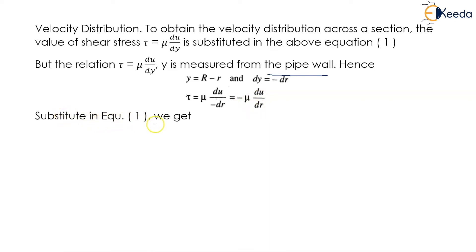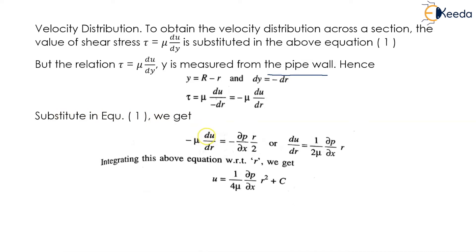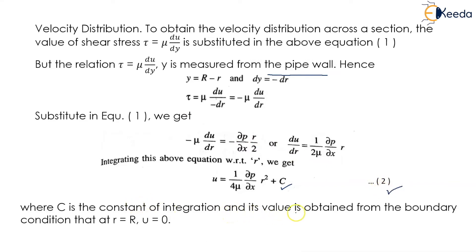Substituting equation 1 we get: minus mu du upon dr equals minus del p upon del x into r by 2. Integrating this equation with respect to r we get: u equals 1 upon 4 mu into del p upon del x into r square plus C. This is equation number 2, where C is the constant of integration whose value is obtained from the boundary condition.